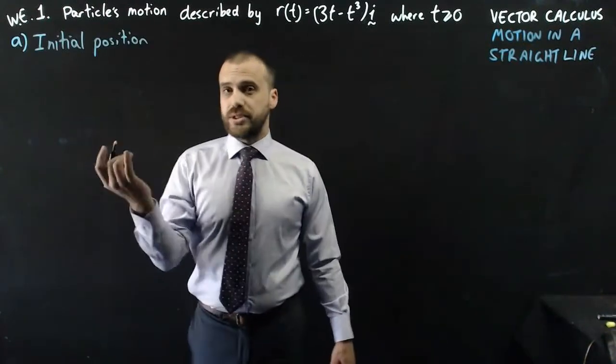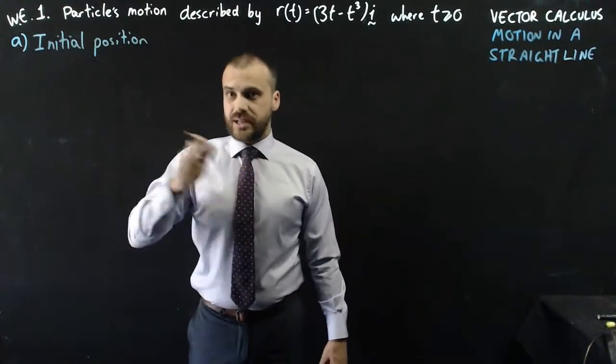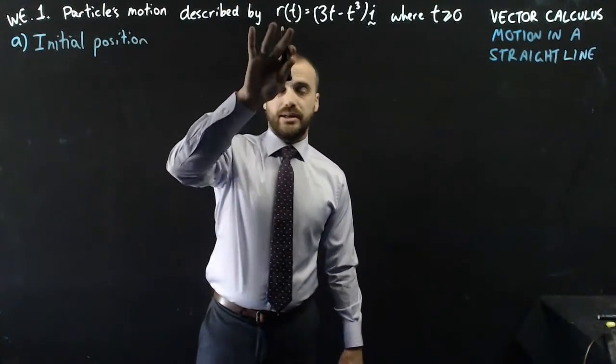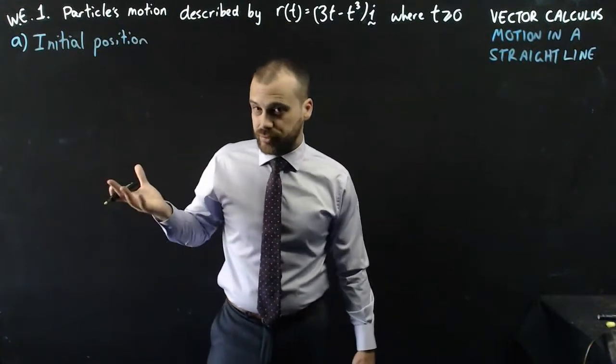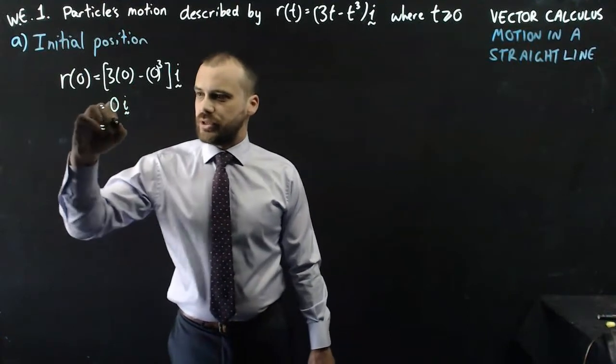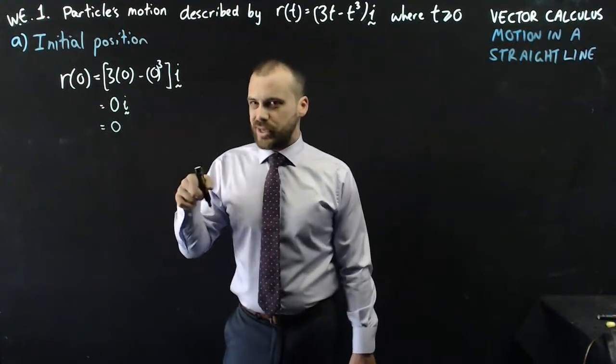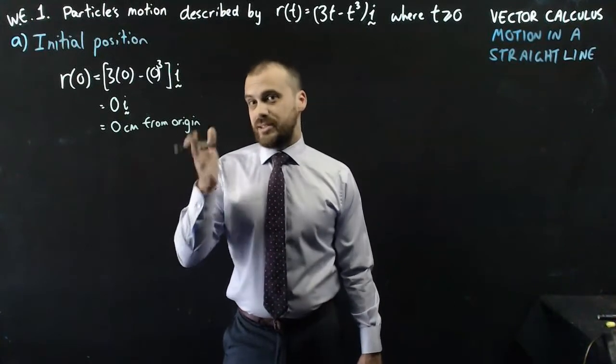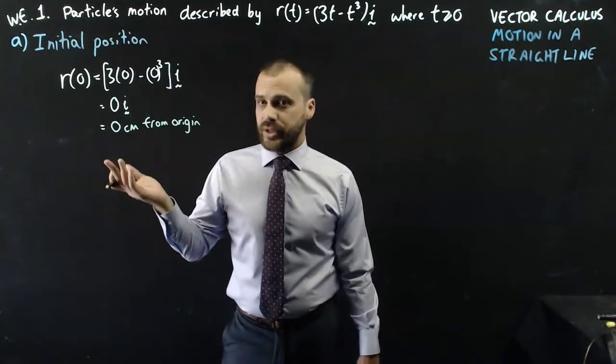Just a quick warm-up, initial position. Position at time zero. That's easy. We just put zero into our displacement vector function. So we get something like this, 0i or just zero. That means it's zero centimeters from the origin, which is just a really stupid way of saying it's at the origin. What are we going to do next?